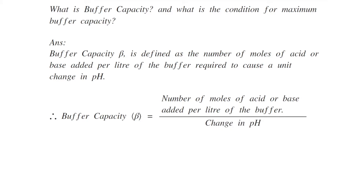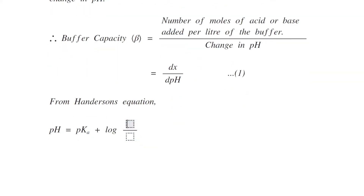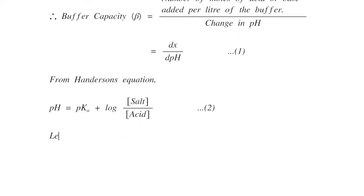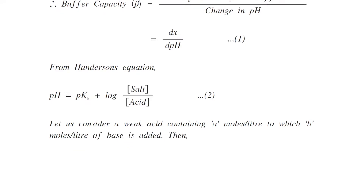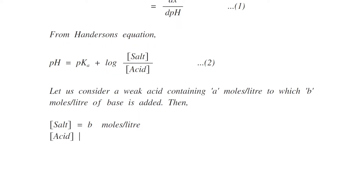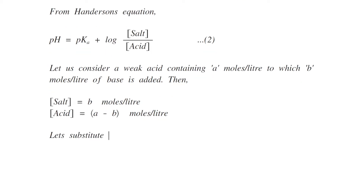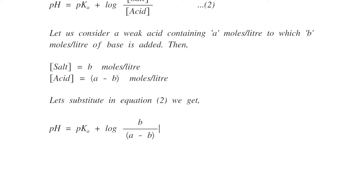From the Henderson equation, pH equals pKa plus log of salt by acid. Let us consider a weak acid containing a moles per liter, to which b moles per liter of base is added. The concentration of salt formed will be b moles per liter, because it is only formed by the combination of acid and base, while the concentration of acid remaining will be (a minus b) moles per liter. Substituting these values, we get pH equals pKa plus log of b by (a minus b).